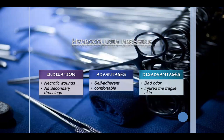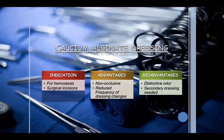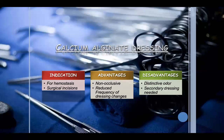Hydrocolloid dressings are used in cases of necrotic wounds as a secondary dressing. They are self-adherent, comfortable, and fixed — no need for extra dressing. Disadvantage: they may have a bad odor and can injure fragile or burned skin. Calcium alginate dressings are applied for hemostasis — where oozing of blood needs to be controlled — and for surgical incisions. Advantage: non-occlusive and reduces frequency of dressing changes. Disadvantage: distinctive odor, and a secondary dressing is sometimes needed.